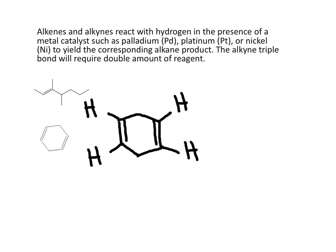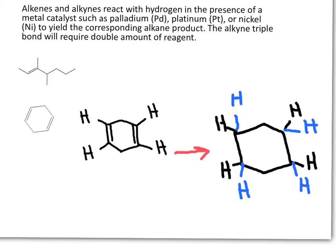Now we look at the reaction with a diene. It has two double bonds, so we will need double the amount of hydrogen. We proceed in the same way — we break the double bond twice and add double the amount of hydrogen to obtain a cycloalkane.